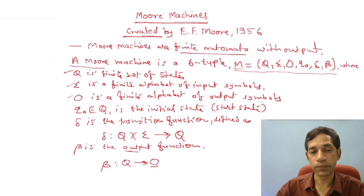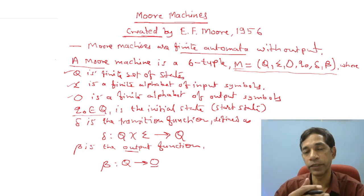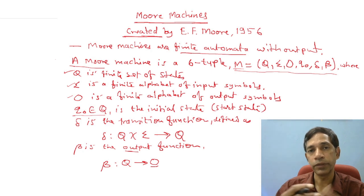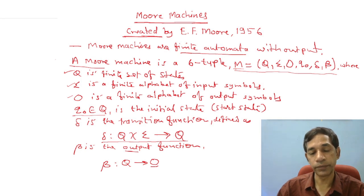You have to define the alphabet O — what symbols you are going to print. O is the finite alphabet of output symbols. q0 is an element of Q and is considered the start state of the machine, meaning your machine starts from the initial state. δ is the transition function defining how your machine transitions based on the input: δ: Q × Σ → Q, meaning your machine goes to any one element of Q.